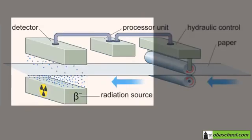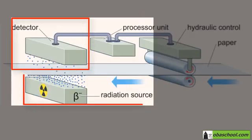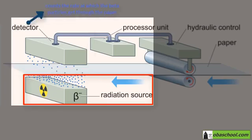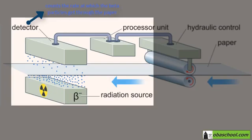The detector of the beta particles, which is the radiation source used, counts the rate at which these beta particles get through the paper from a source on one side.